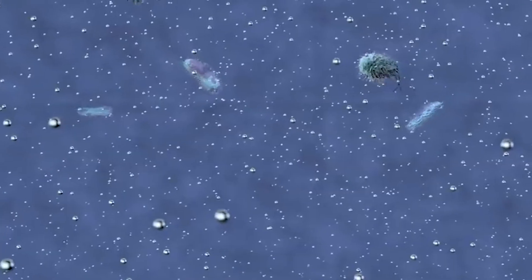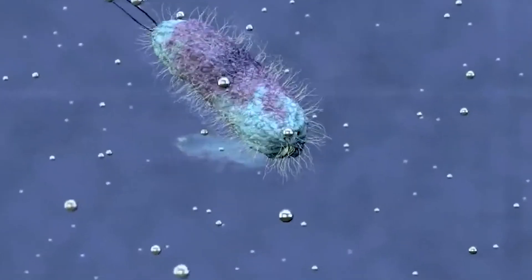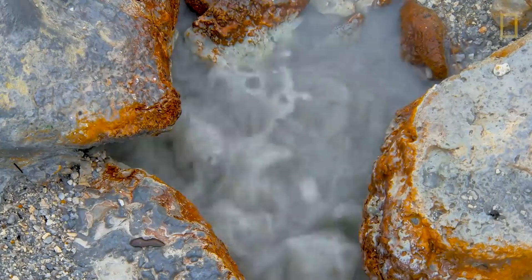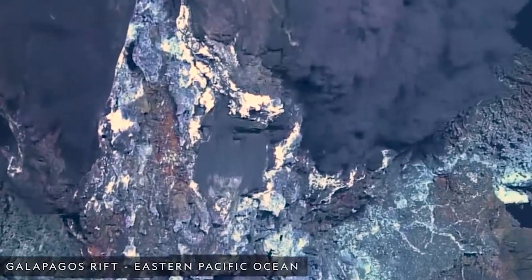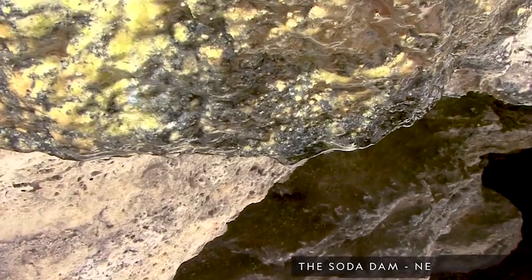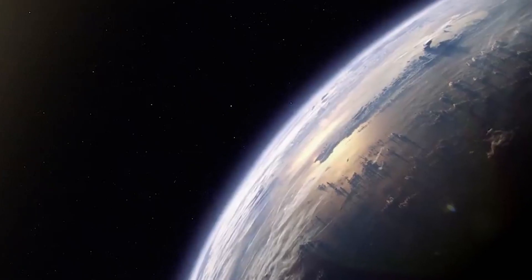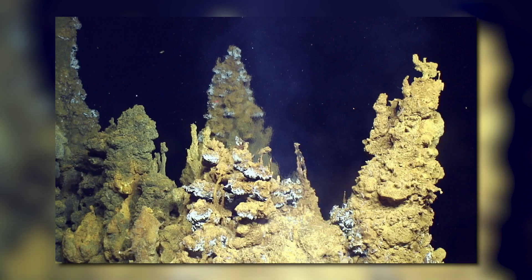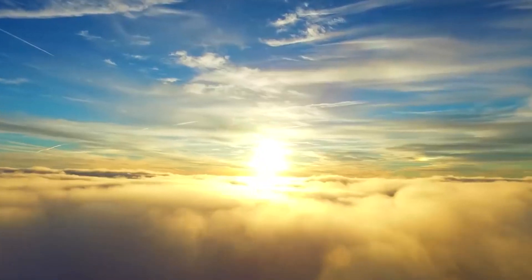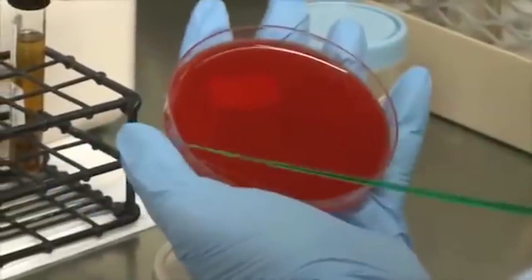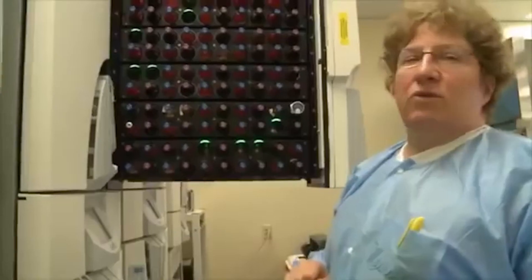Another approach is to look for biosignatures, which are chemical or physical signs that suggest the presence of life on a planet. Biosignatures can take many forms, such as oxygen, methane, or other gases that are produced by living organisms and can be detected in a planet's atmosphere. Biosignatures can also be indirect, such as changes in a planet's reflectivity, temperature, or spectral features that are consistent with the presence of vegetation, oceans, or clouds. Some proposed biosignatures are more robust than others and require careful analysis and modeling to rule out false positives or natural sources.